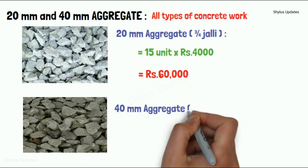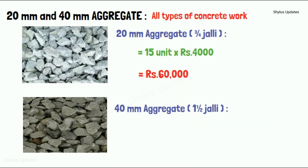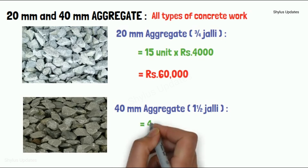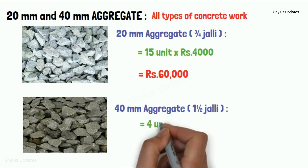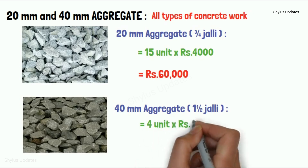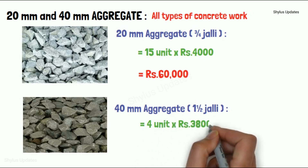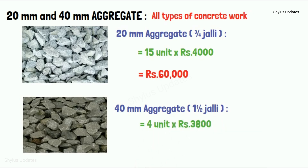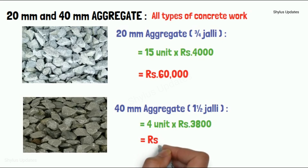40mm aggregate: For an 850 square feet house, 4 units of 40mm aggregate is required. The current market rate of 40mm aggregate is Rs. 3,800. So when you multiply 4 units into Rs. 3,800, you get Rs. 15,200.